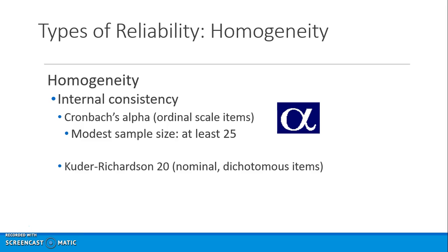Homogeneity is a type of reliability — specifically internal consistency reliability — and typically you want at least 25 participants. It's represented by the Greek letter alpha and is used for ordinal items. SPSS uses the same formula for both ordinal items and nominal level dichotomous items, which is the Kuder-Richardson 20, though older instrument books describe the formula differently. Everyone now uses SPSS or similar software for estimating internal consistency reliability.